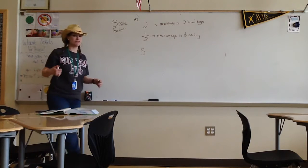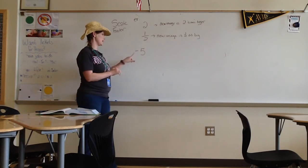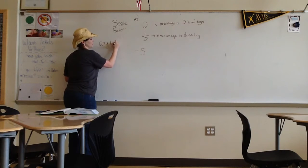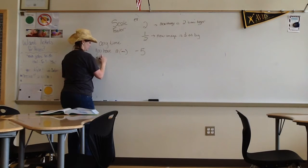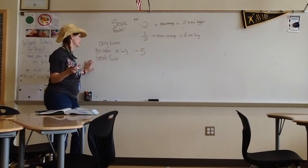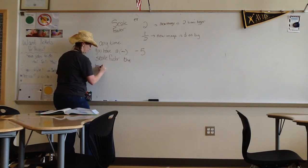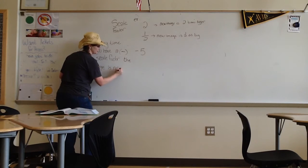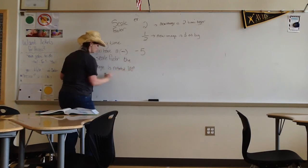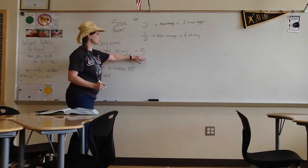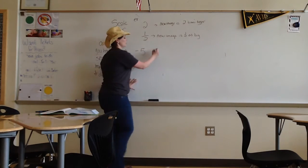Anytime you have a negative scale factor, write this down. Anytime you have a negative scale factor - whenever you see scale factor in the book, they represent it with the variable K by the way for scale factor - negative scale factor, the image is rotated 180 degrees and dilated. So not only would it be five times bigger, it would also be rotated on the coordinate plane 180 degrees.